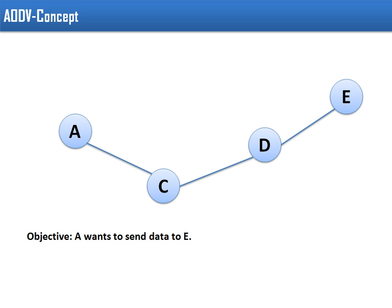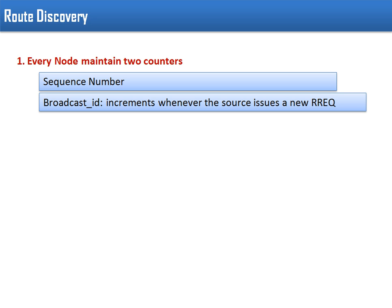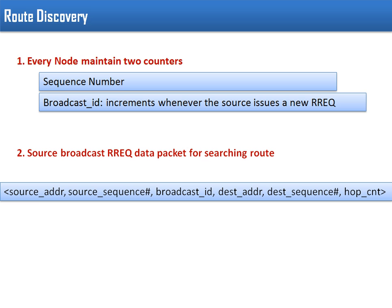Initially, node A does not have any information about where node E exists in the network, so A will start a route discovery mechanism and broadcast a route request packet. In the route request packet, entries are similar to DSR but with some changes. Every node maintains two counters: one is the sequence number, which works as a timestamp, and the second is the broadcast ID. Whenever any node sends a route request packet, that packet carries a unique ID, and the node increments this broadcast ID each time.